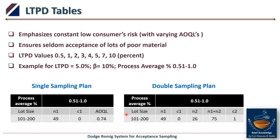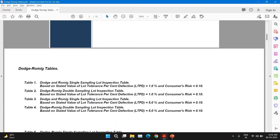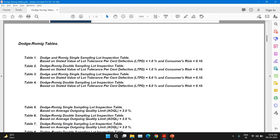To read the LTPD table and select a sampling plan, we use LTPD values such as 0.5, 1, 2, 3, 4, 5, up to 10%. For example, with LTPD of 5%, consumer risk (beta) of 10%, and a known process average, we can select a single or double sampling plan. For a process average of 0.51 to 1.0 and lot size 101 to 200 under LTPD 5% (Table 3), the plan gives n = 40, c = 0, and AOQL = 0.74%.